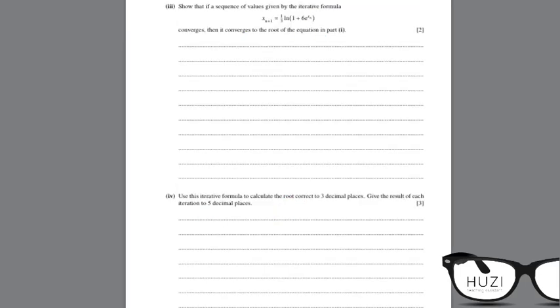Part 3. So, part 3 showed that if sequence of values given by the iterative formula converges, then it converges to the root of the equation in part 1. First you remove n plus 1 and n. So, this would be x equals to 1 upon 3 ln, 1 plus 6 e is to power x. 3 goes over there. This becomes 3x equals to ln, 1 plus 6 e x. We shift ln on the other side. This becomes e to power 3x equals 1 plus 6 e x.